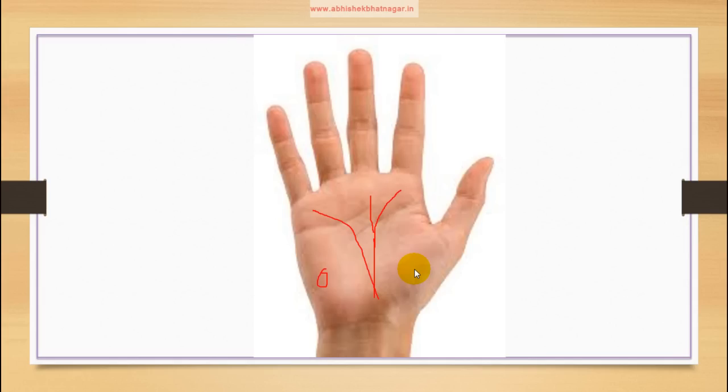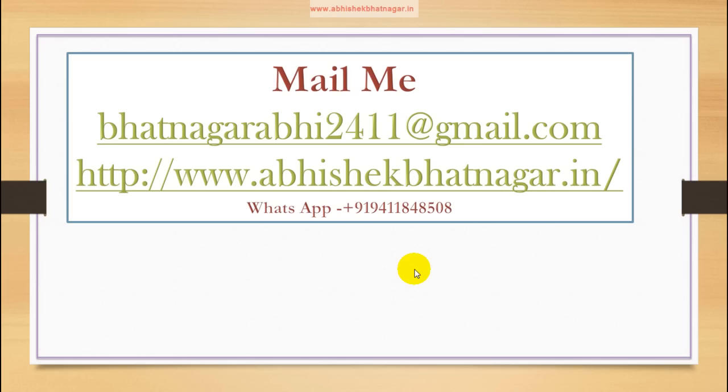So these are the indications which I am talking about. This is part one. Part two will be coming soon. If you have any kind of query, you can contact me on this mail ID: bhamagarabhi2411@gmail.com, my website abhishekbhatnagar.in, and my WhatsApp number 9411848508. There are some payments for detailed analysis, but general analysis is free of cost. When you send your message, please send your details also. Hope you like it. Please share this video and subscribe. Thank you for watching.